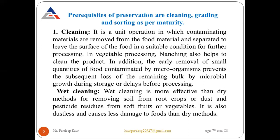In vegetable processing, we do blanching, which helps to clean the product. Blanching is a process in which we boil any kind of vegetable for a few seconds to a minute. Additionally, early removal of food contaminated by microorganisms prevents subsequent loss of the remaining bulk by microbial growth during storage and before processing. It is very necessary to remove food contaminated by microorganisms, which can increase microbial activity during processing.